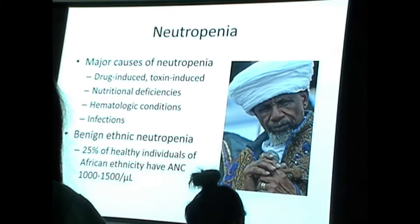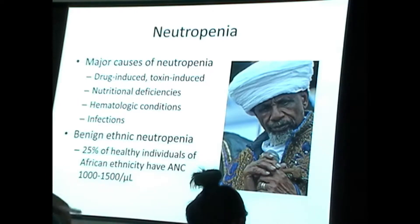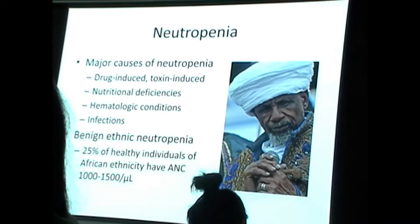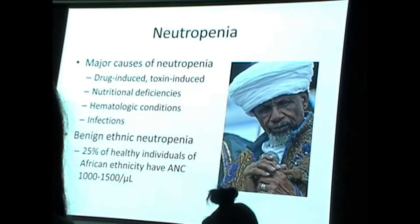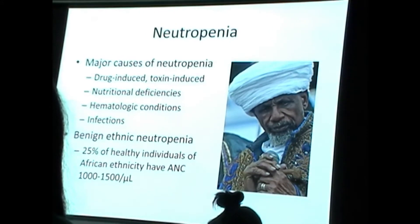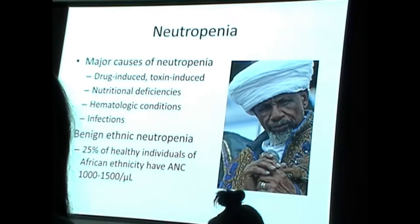Benign ethnic neutropenia refers to an absolute neutrophil count that is low — below 1,800 — and which should theoretically cause disease, but in these individuals there is no disease. These individuals are entirely asymptomatic and physiologically healthy and functional.